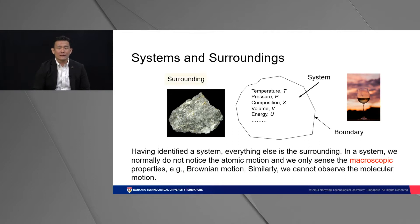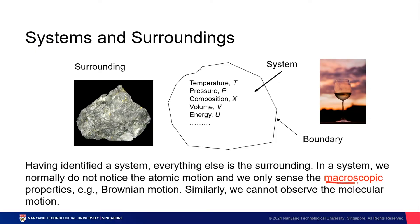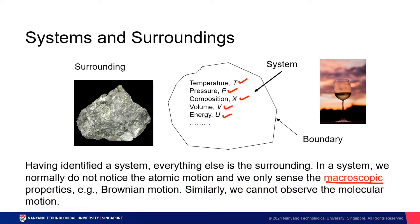A system is separated from its surroundings by a boundary, and everything else other than the system is its surrounding. In a system, we usually do not notice atomic motion and can only sense what are known as macroscopic properties. Macroscopic properties are things we can observe — things like temperature, pressure, composition, volume, and energy. We cannot observe molecular motion, so those are not macroscopic properties.